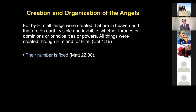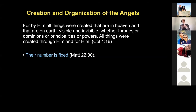Let's talk about the creation and organization of angels. Colossians 1:16 is a very important verse. Speaking of Christ, Paul says: 'For by him all things were created that are in heaven and that are on earth, visible and invisible, whether thrones or dominions or principalities or powers. All things were created through him and for him.' Those phrases — thrones, dominions, principalities, and powers — are titles or categories of angels.